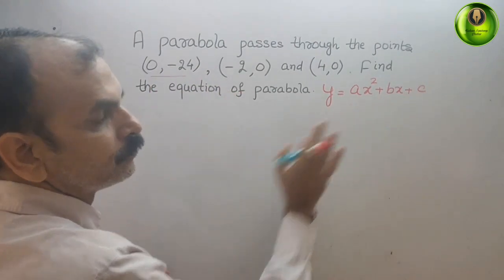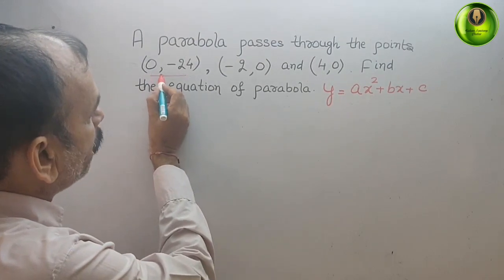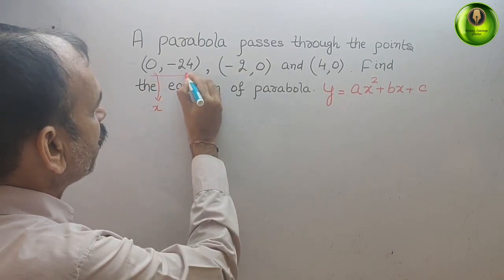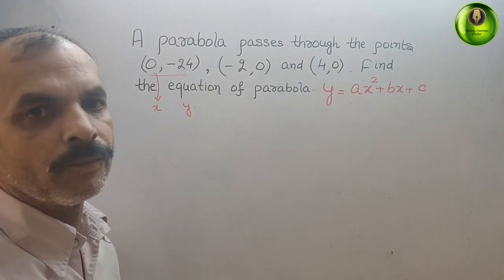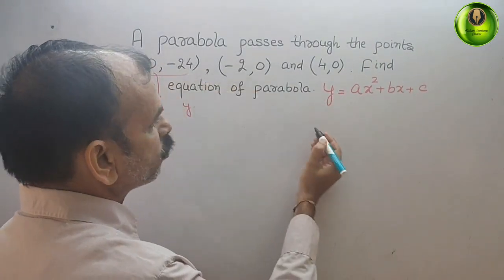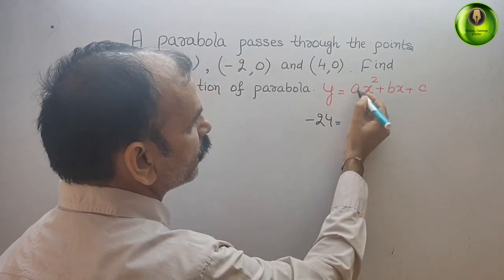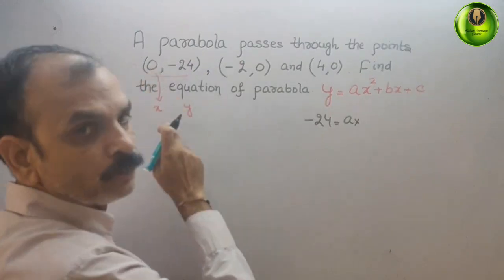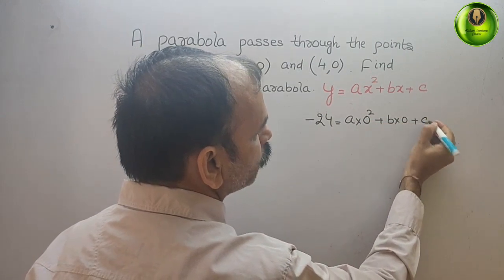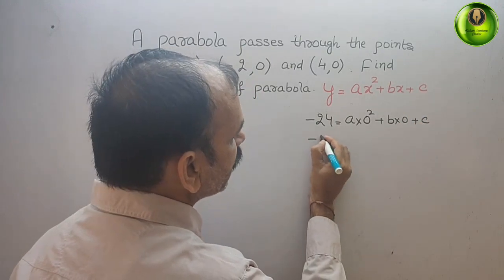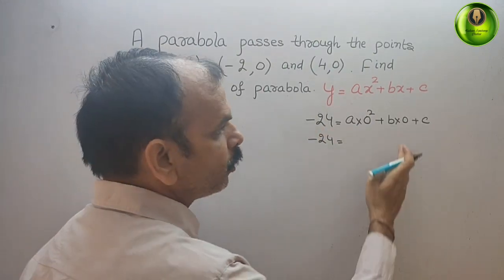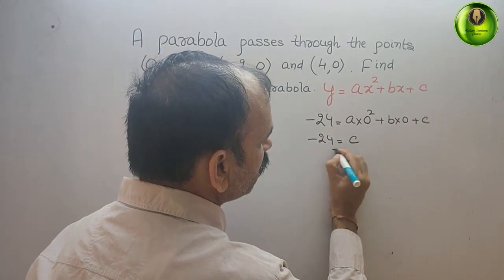One by one we will substitute these values. First, they have given us (0, -24), that means 0 is your x and -24 is your y. Substituting, we get: -24 = a(0)² + b(0) + c, which gives us -24 = 0 + 0 + c. Therefore, c = -24.